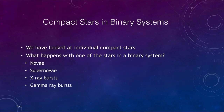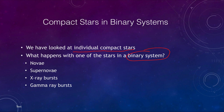In terms of compact stars, we have looked at the individual ones — the white dwarfs and the neutron stars. But what happens when one of these stars is in a binary system? We know that half the stars in the universe are in binary systems, so there are a lot of cases where a compact star will be present in a binary system. We can get novae, supernovae, and x-ray and gamma ray bursts.